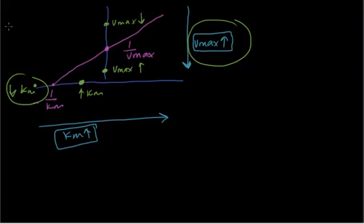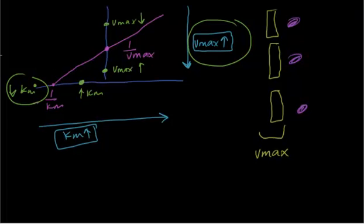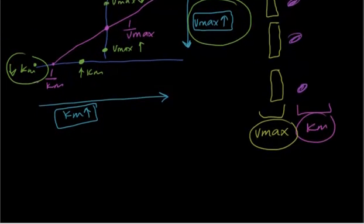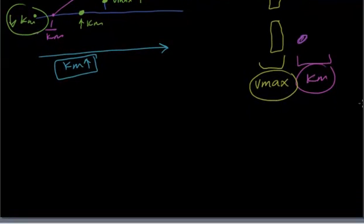Now, regarding enzymes and substrate: this is the control curve. You have three enzymes and three substrates. From the number of enzymes you can read the Vmax, and from the number of substrates you can figure out the KM. We will now talk about two features: the competitive and non-competitive inhibitor.